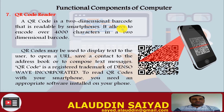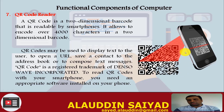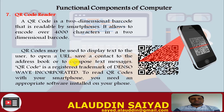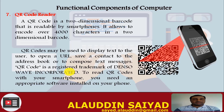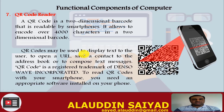QR Code Reader. A QR code is a two-dimensional barcode readable by smartphones. It allows encoding over 4,000 characters in a two-dimensional barcode format. QR codes may be used to display text to the user, open a URL, save a contact to the address book, or compose text messages. QR code is a registered trademark of Denso Wave Inc., the company that invented this technology. To read QR codes with your smartphone, you need appropriate software installed on your mobile device.